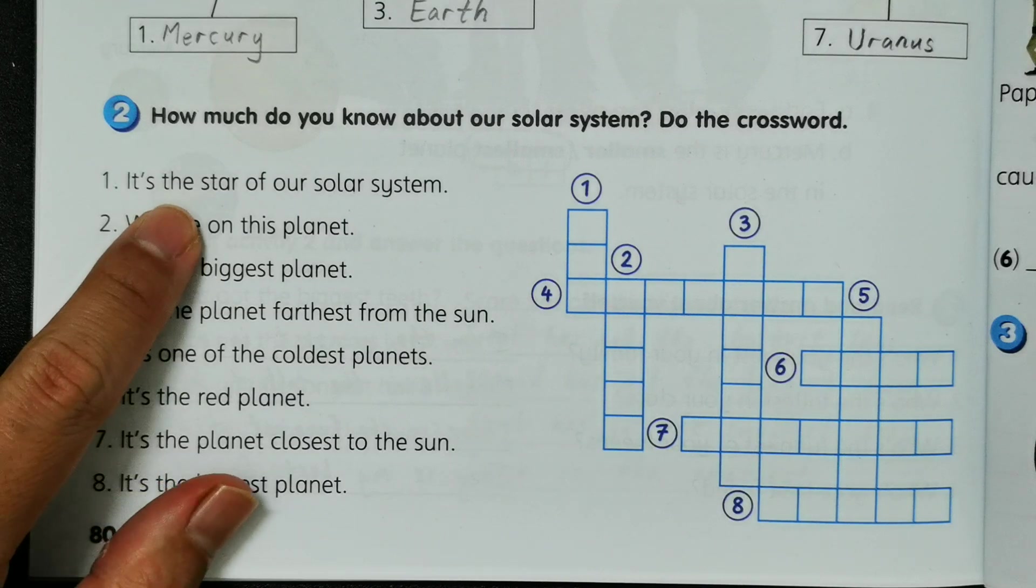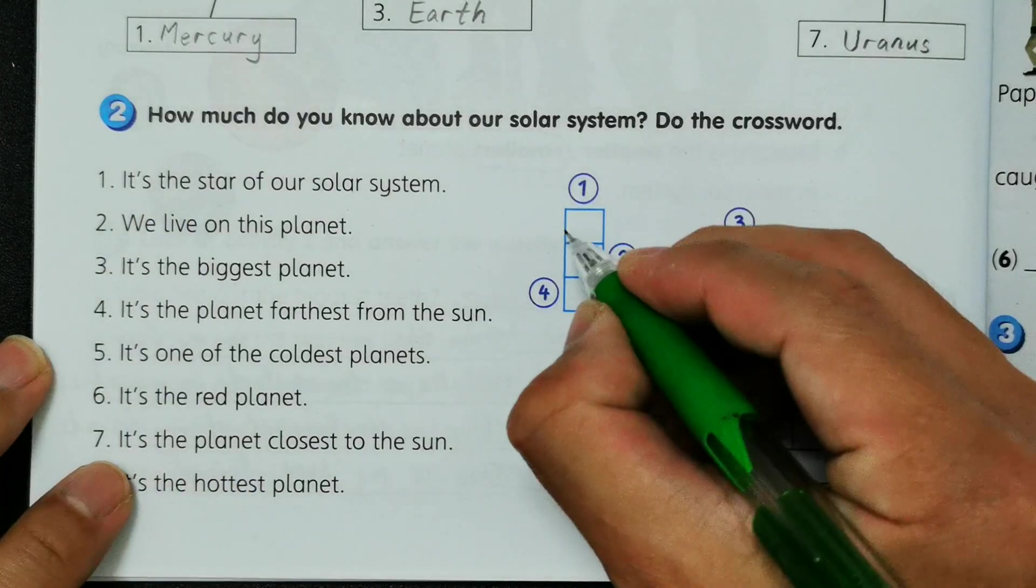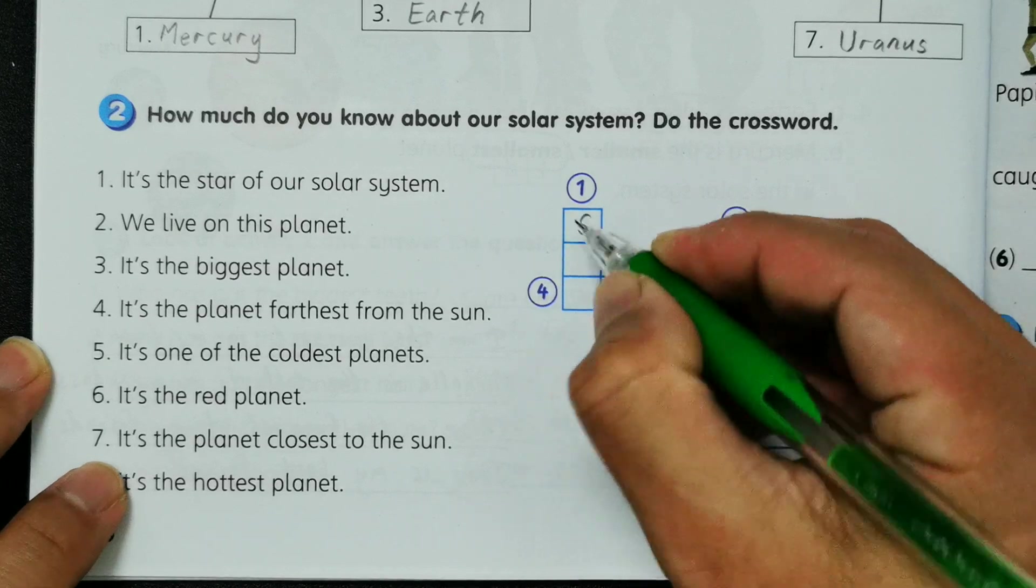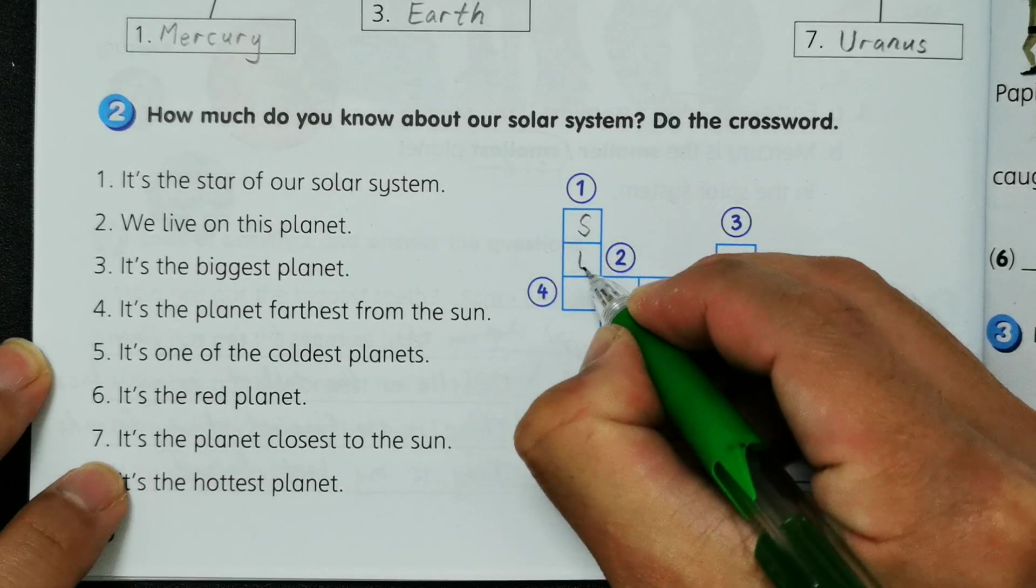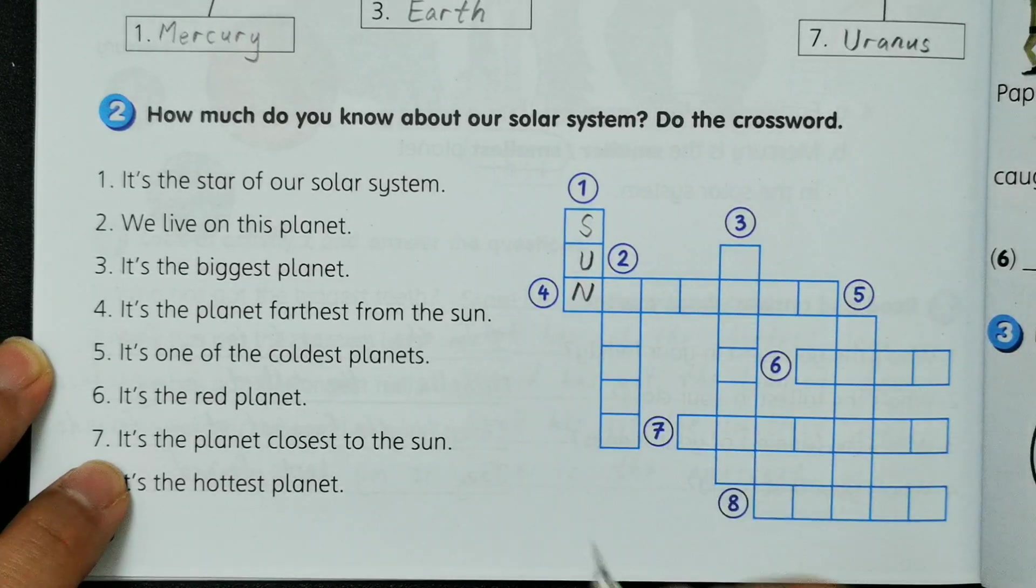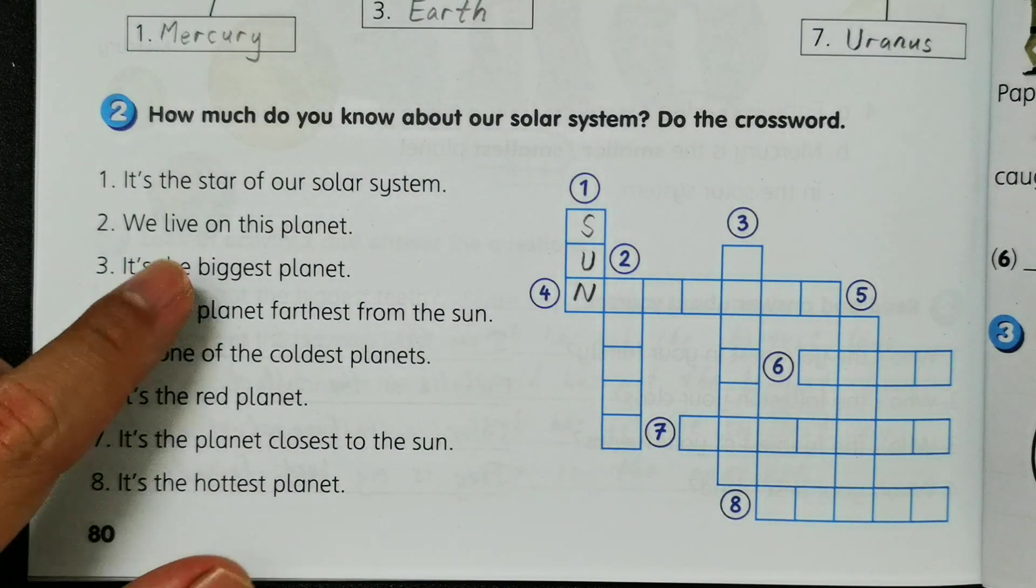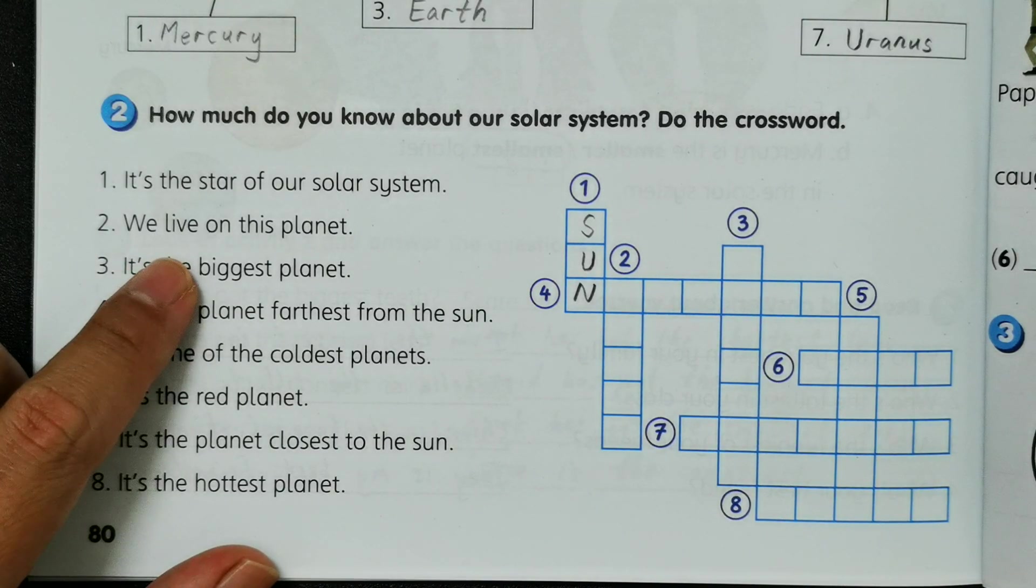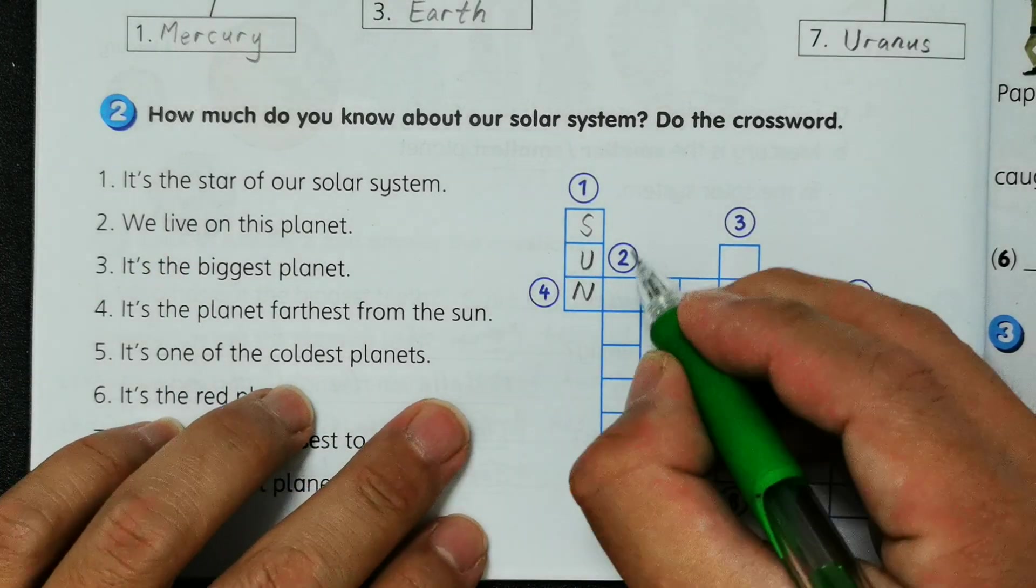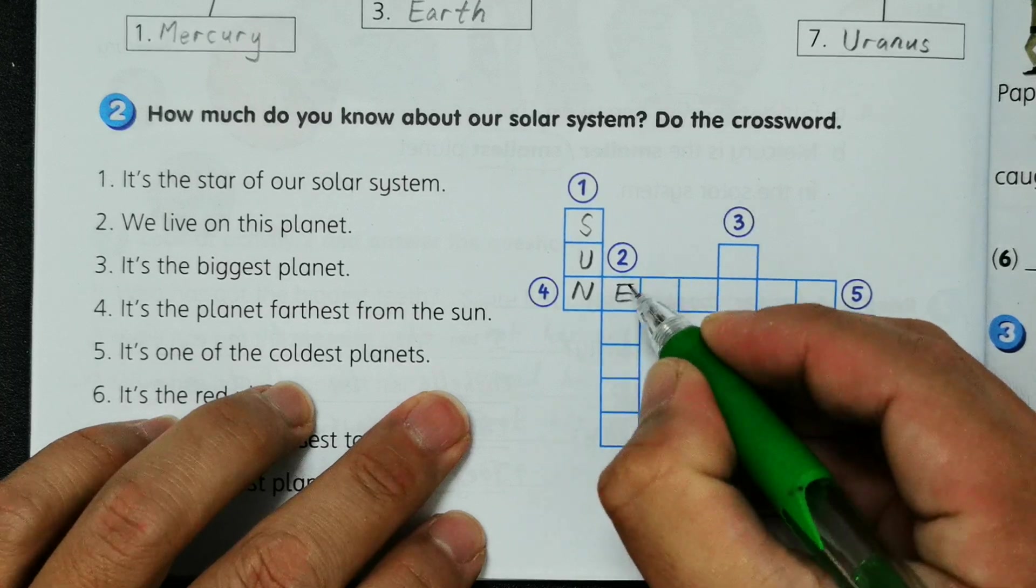So the only star in our solar system, it is called the Sun, so we have S-U-N, all capitalized. And then number two, we live on this planet. So until now, human lives on this planet, it is our home, Earth. So number two we have E-A-R-T-H.